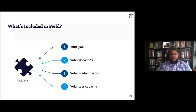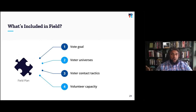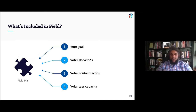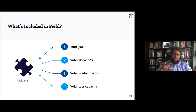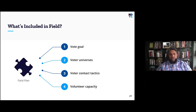Everything else comes out of your win number: your vote goal, your voter universe, your voter contact tactics, when and where you door knock, how much door knocking versus phone calls, who you target, and how much volunteer capacity you need to get it all done — that's all in your field plan. It also includes your ballot access plan — how are you going to get on the ballot? Each state is different, so make sure that's included.